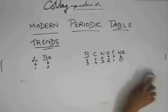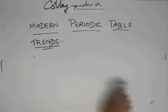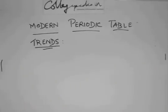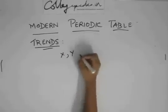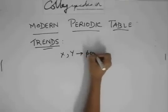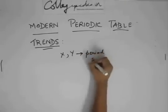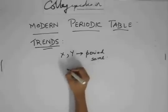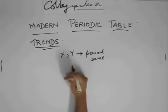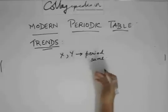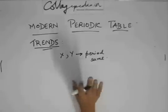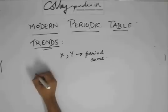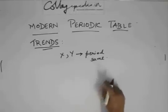You can have very simple questions like there is x and y, they belong to the same period. Would their valencies be same? If they belong to the same period, their valencies cannot remain same, although they can because it goes from 1 to 3 to then again 3 to 1.